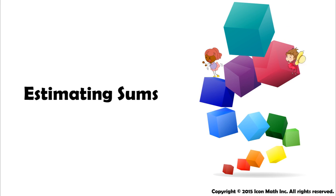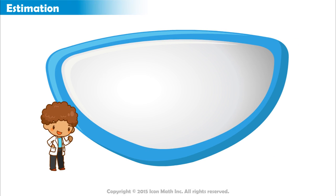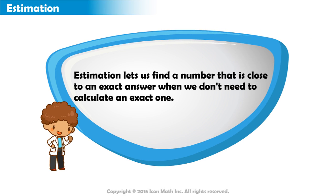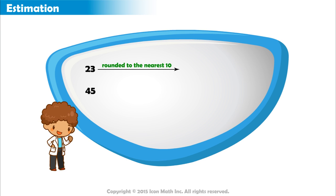Estimating sums. Sometimes it is easier to estimate an answer than to try and find the exact one. One method for estimation is rounding numbers to make them easier to work with mentally.